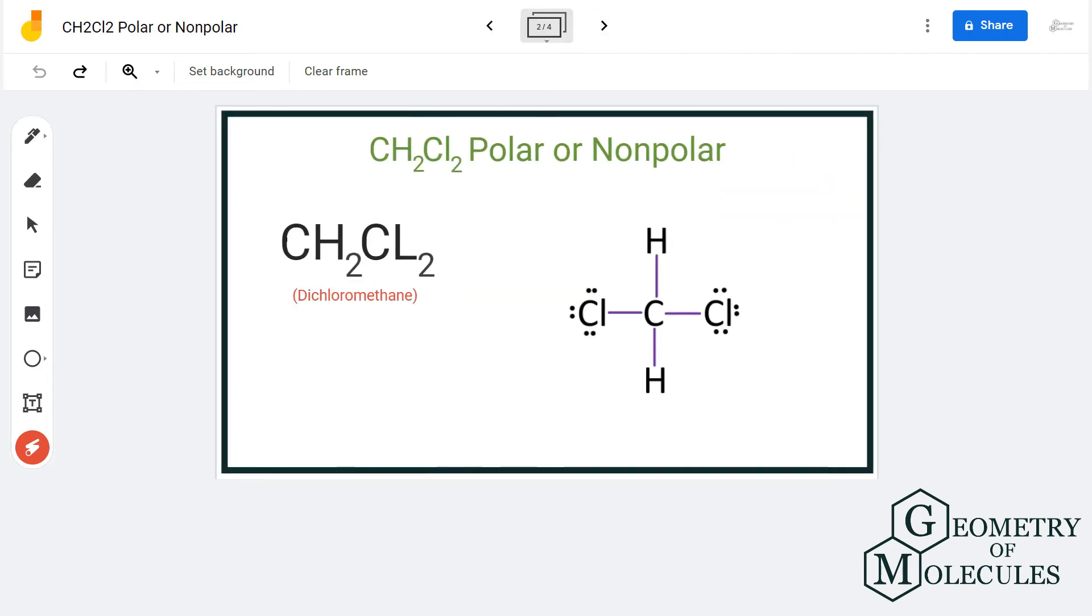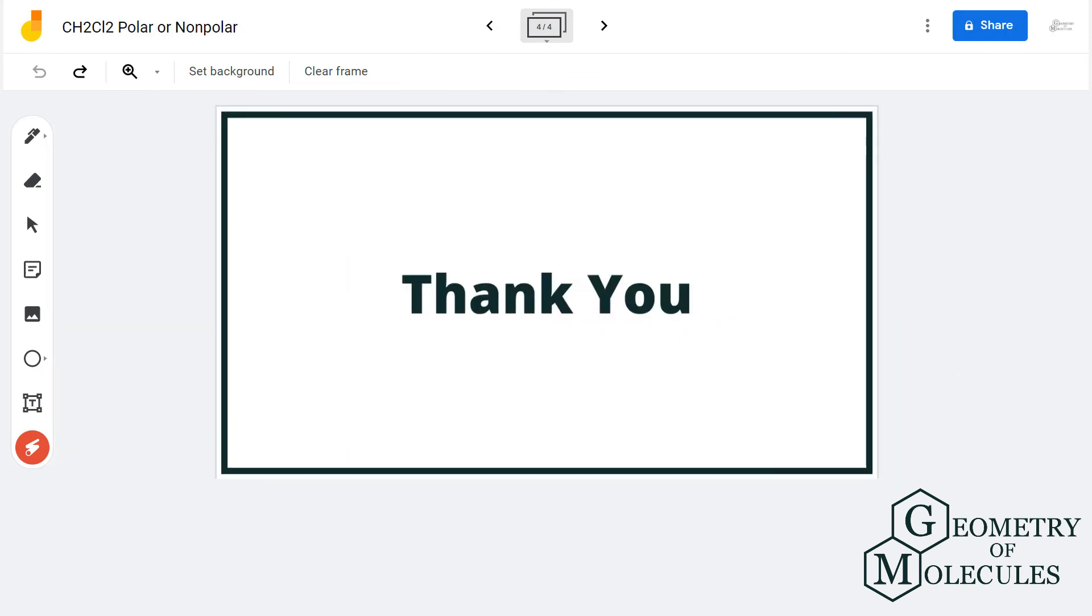This means there is a formation of poles in this molecule, making CH2Cl2 a polar molecule. Dichloromethane is a polar molecule. For more videos on Lewis structure, molecular geometry, and polarity of molecules, subscribe to our channel.